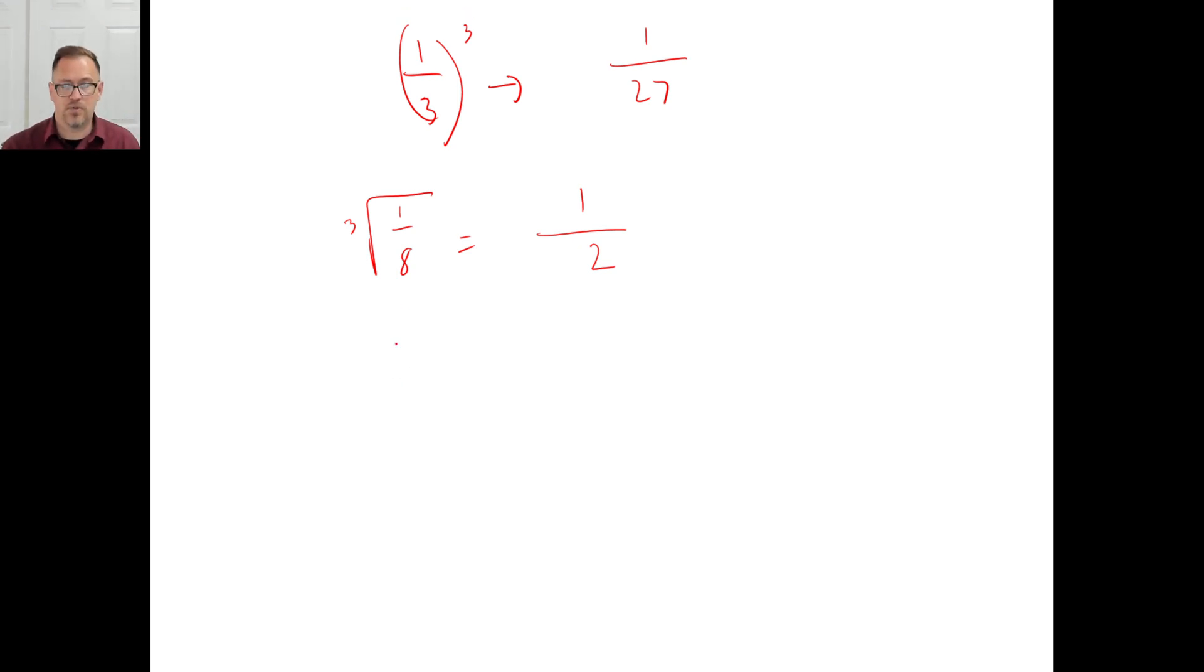All right. Let's take a look at C. Two thirds to the fourth power. Now this literally means, and if you want to go ahead and do this, you can write out two thirds four times and multiply it. You might not want to do that though. You might just want to go, okay, what's two to the fourth power? That's going to be two times two, four times two, eight times two, 16. I got 16.